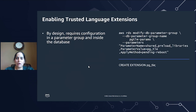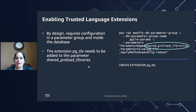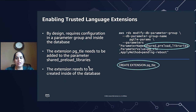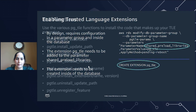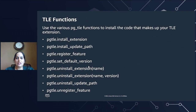Enabling TLE on Amazon RDS is very similar to how you enable PL Rust. You add the extension PGTLE to the shared preload libraries parameter and then restart your database. Following the restart, you create the extension in your database and begin using TLE. Once you have PGTLE installed, you get access to various functions to create and manage your extensions. You can use these functions to install, register, update, and manage your TLE extensions developed using this development kit.